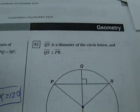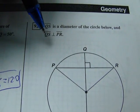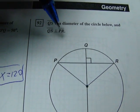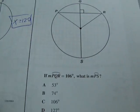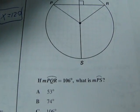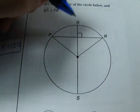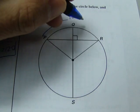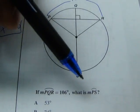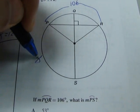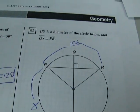Next is 92. Segment QS is a diameter of the circle below, and segment QS is perpendicular to PR. So, we know this is a diameter, and these are perpendicular. Okay. If measure of arc PQR equals 106 degrees, what is the measure of arc PS? Okay. So, PQR is 106. Okay. And what is the measure of arc PS? So, we're trying to find this. Okay. So, this looks like a little bit of a challenge.